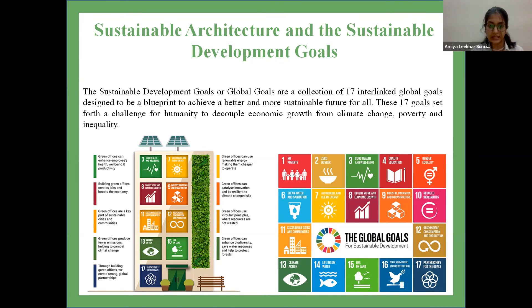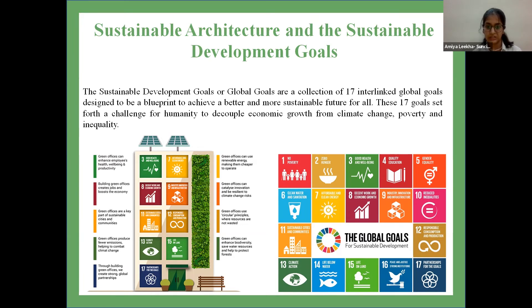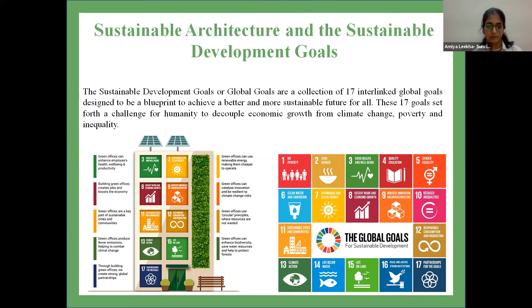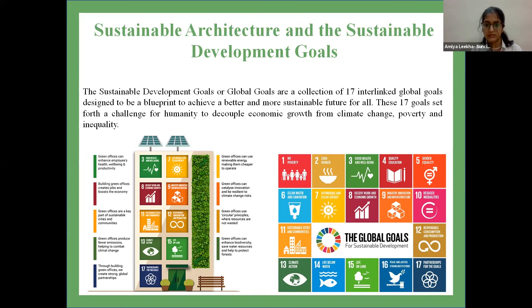The United Nations has a collection of 17 sustainable development goals for the world, and sustainable architecture addresses nine of them. These nine goals include: decent economic growth through building green offices and boosting the economy; good health and well-being; innovation and infrastructure resilience toward climate change; affordable energy through renewable sources; sustainable cities; responsible consumption; climate action through fewer emissions; life on land by enhancing biodiversity, saving water, and protecting forests; and partnership for goals by creating sustainable buildings.